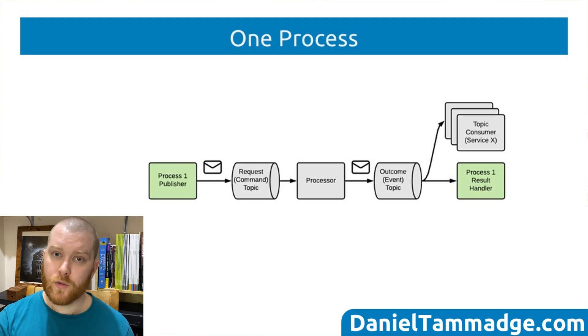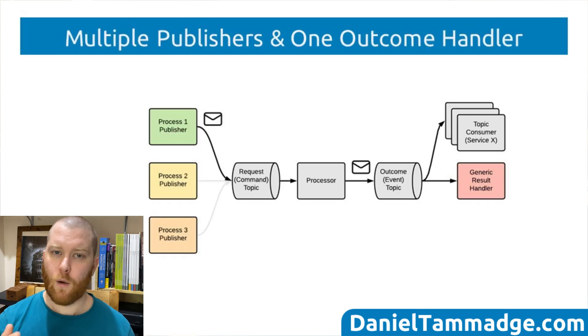In this diagram, I'm also showing that there might be other services or processes which would need to perform an action on the outcome events.